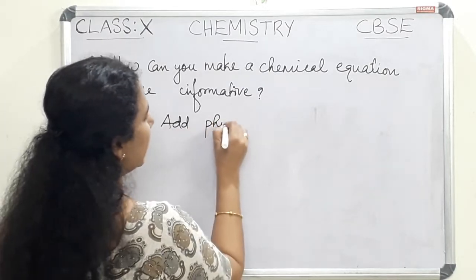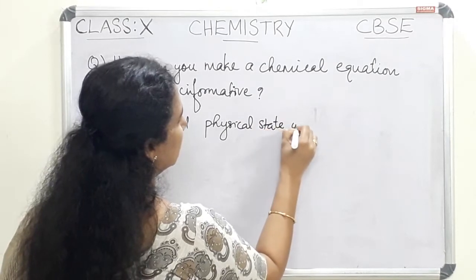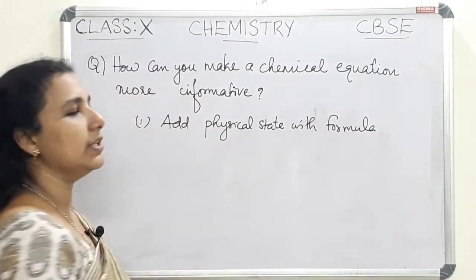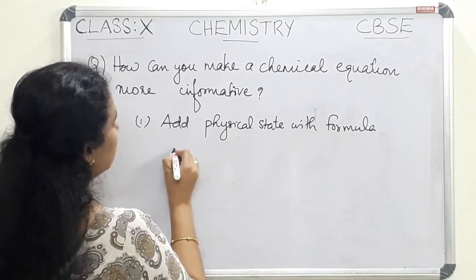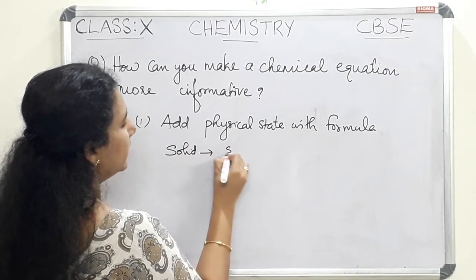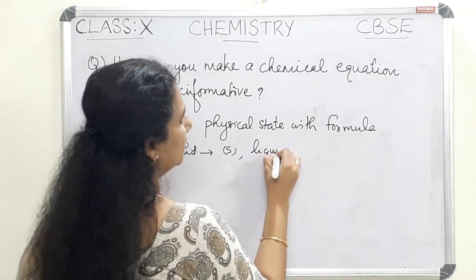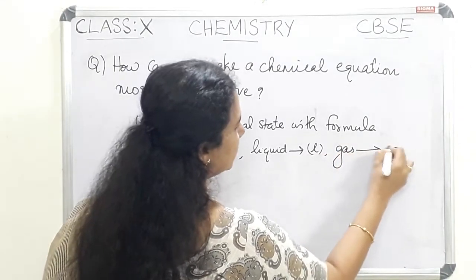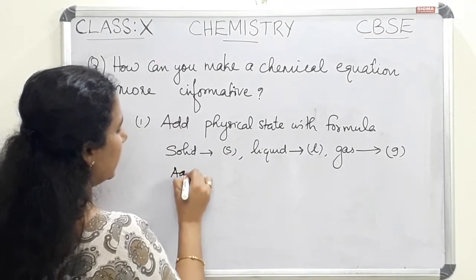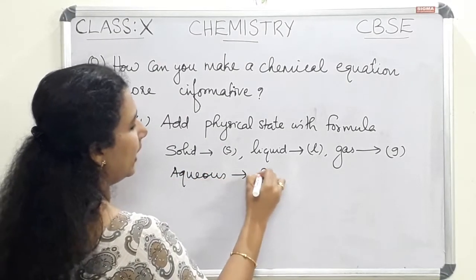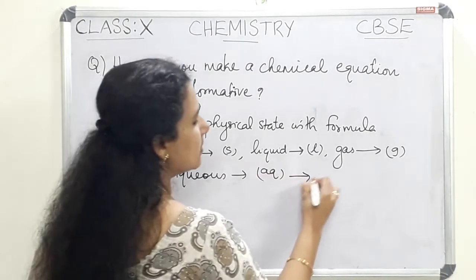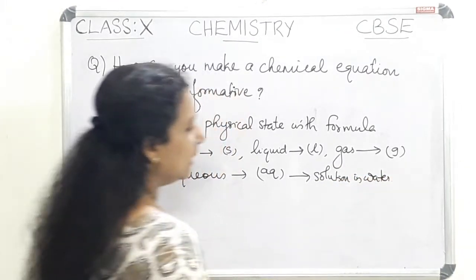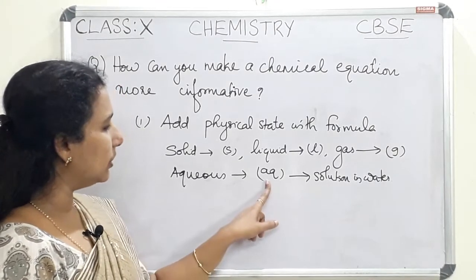Add physical state with the formula. We have to add the physical state of the reactants and the products. If it is a solid, we can add (s). If it is a liquid, we can add (l). If it is a gas, we can add (g). And also, if it is an aqueous solution, we can add (aq) in bracket. Aqueous means solution in water.